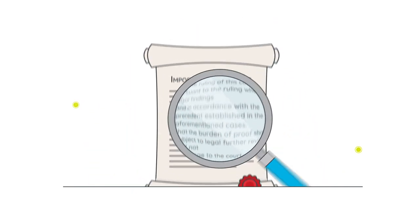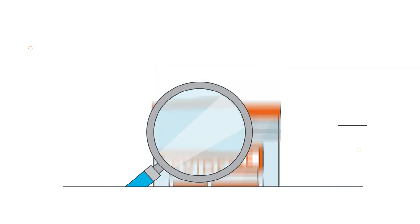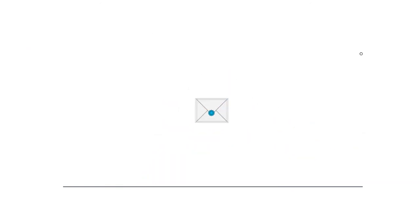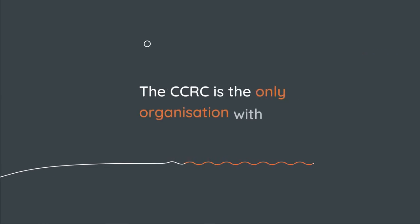If our investigation finds something new in your case, like a change in the law, new evidence or a new witness statement, we can send your case back to the appeal court. The CCRC is the only organisation with the power to do this.